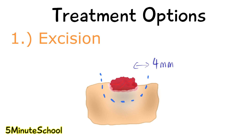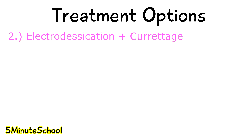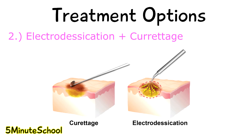Another type of treatment is called electrodesiccation and curettage. The tumor is curetted aggressively, the area is treated with electrodesiccation, and usually about 3 cycles are performed to ensure effectiveness. This is more commonly done on the superficial and nodular types of basal cell carcinoma.